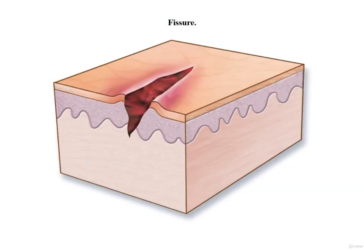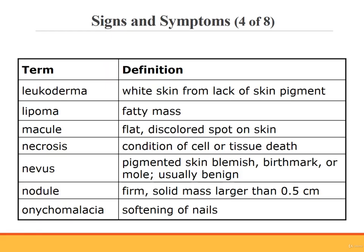On this slide is a simple illustration of a fissure. Leukoderma is having skin that appears white because the normal skin pigment is absent. It may be isolated to some areas of the skin or may affect all of the skin; this should not be confused with albinism, which we'll discuss in a little bit. A lipoma is a fatty mass. A macule is a flat, discolored area that is flush with the surface of the skin — an example is a freckle. Necrosis is an abnormal condition of cell or tissue death. A nevus is a pigmented skin blemish, birthmark, or mole; it is usually benign but may become cancerous. A nodule is a firm, solid mass of cells in the skin larger than 0.5 centimeters in diameter. Onychomalacia is a softening of the nails.